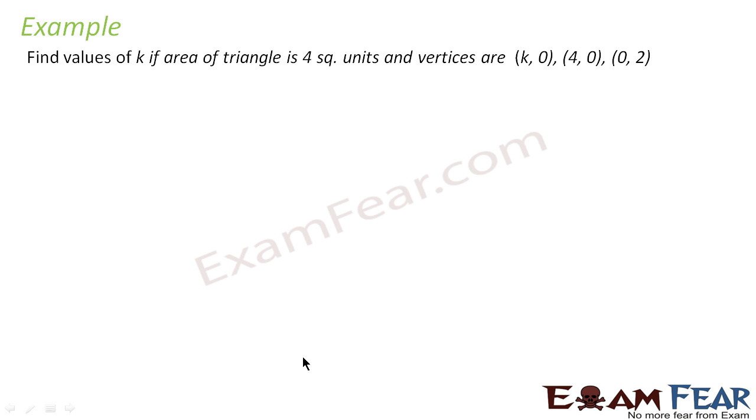Here you have to find the value of K if the area of the triangle is 4 square units and the vertices are K, 0; 4, 0; and 0, 2. Very similar portion almost. So this is X1, Y1; X2, Y2; and X3, Y3. We are told that area is 4 square units and what is the value of area? 1 by 2 times the determinant: X1, Y1, 1; X2, Y2, 1; X3, Y3, 1. So this is the area we know.